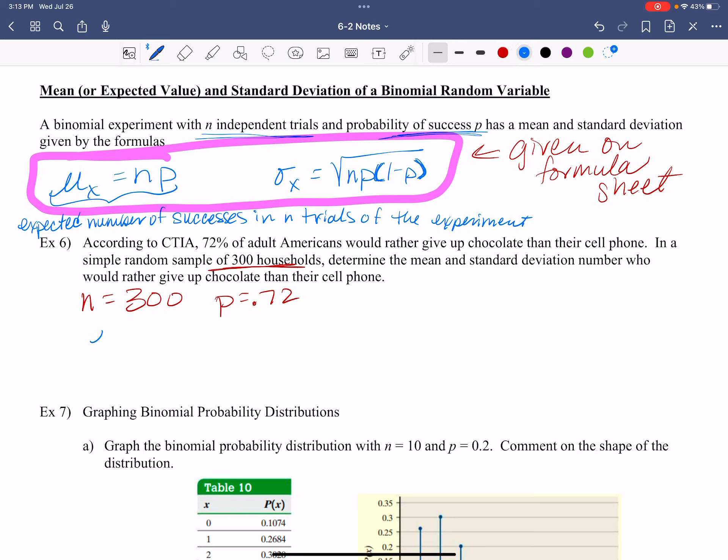All right, so let's do it right now. Here's my mean or my expected value is N times P. So the mean is 300 times 0.72. What is 300 times 0.72? Do you have that on your calculator? 216. Good. So my mean here is 216.